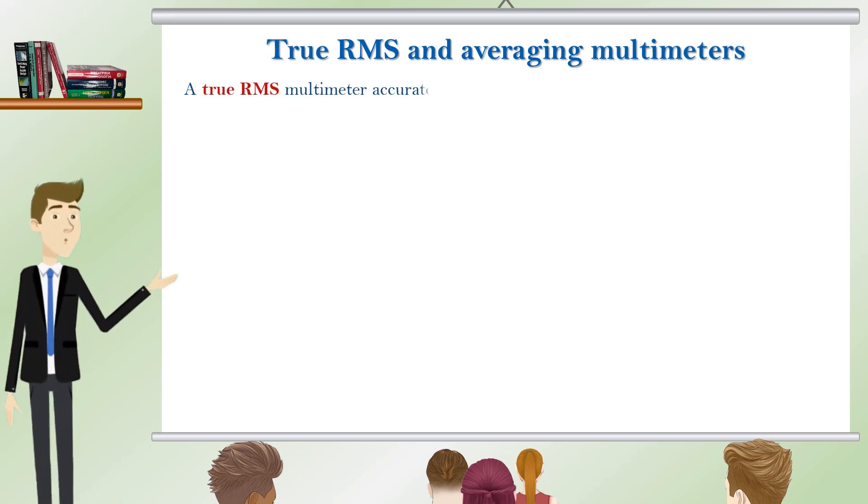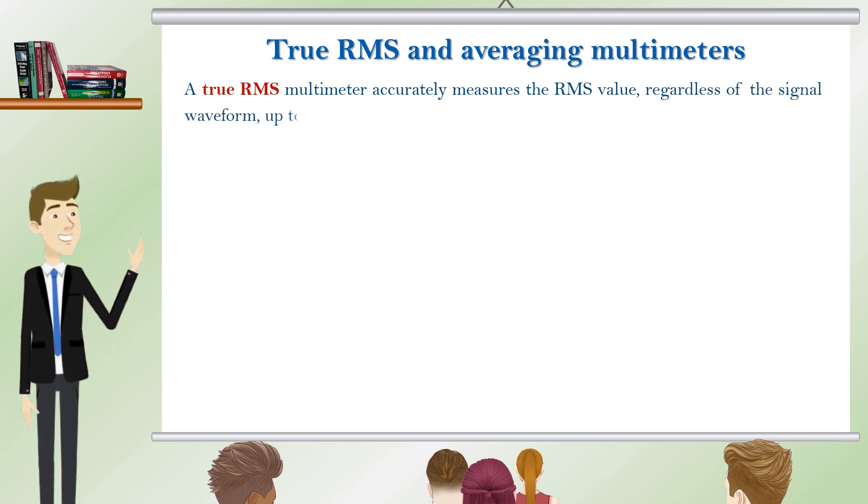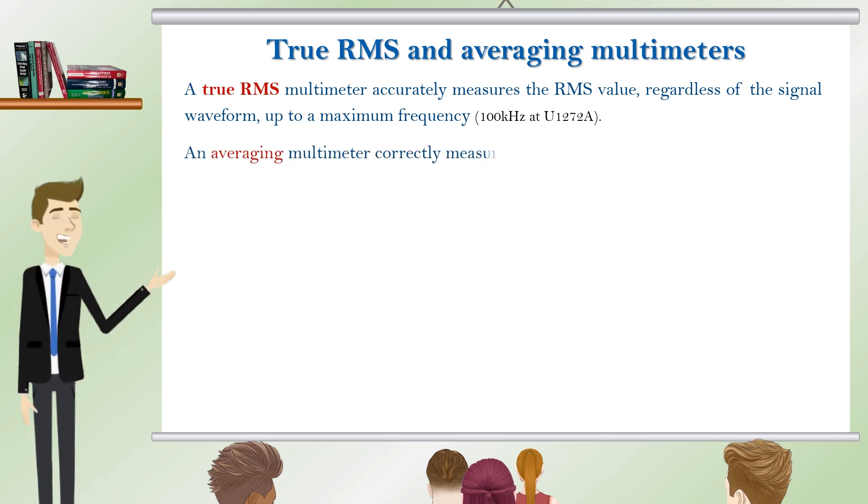A true RMS multimeter accurately measures the RMS value regardless of the signal waveform up to a maximum frequency. An averaging multimeter correctly measures the RMS value only on sine waves.